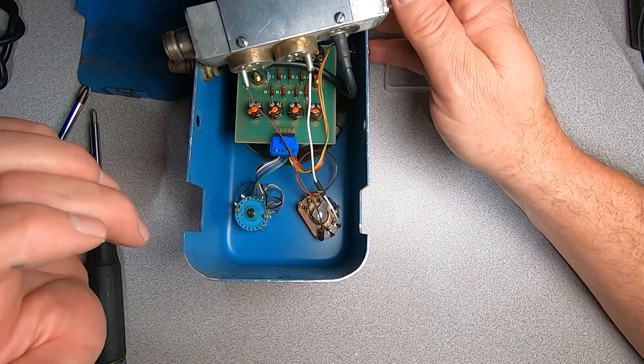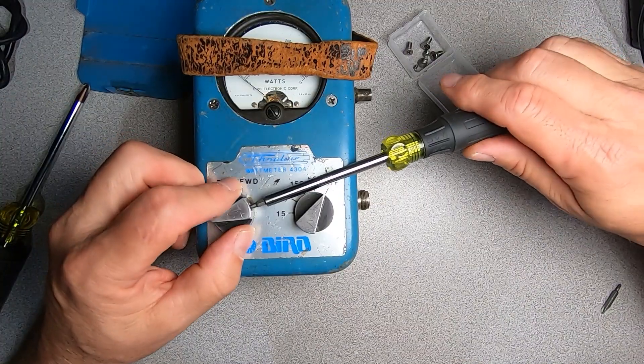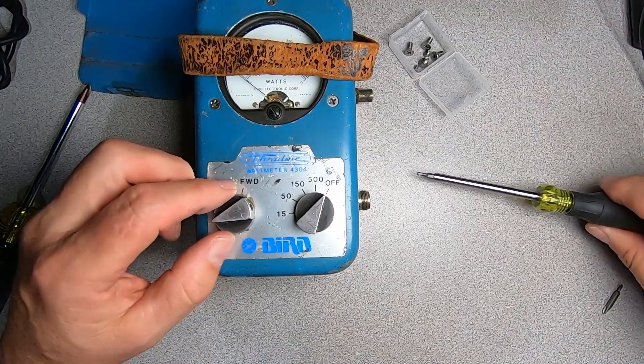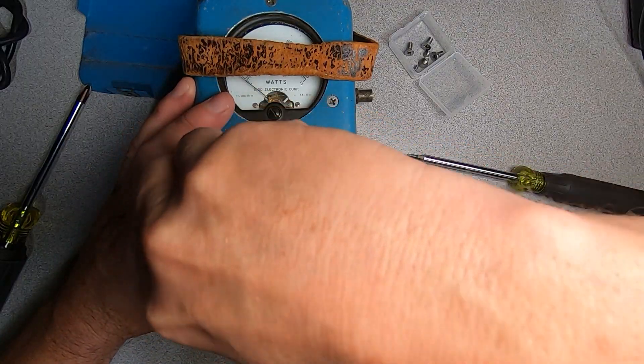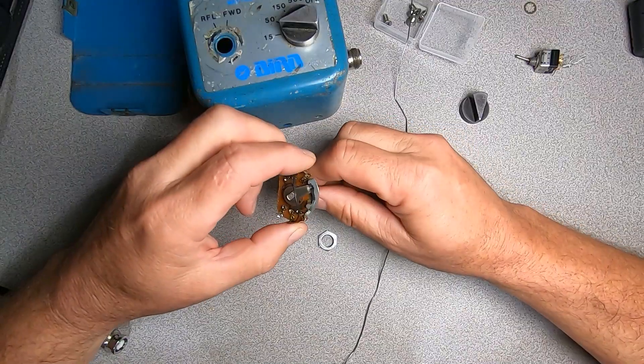Let's remove the knobs from the front and see if we can get this switch out of here. We've turned our meter over and we'll remove our knob by backing the set screw out. And we've got a nut here. Let's study our switch here.